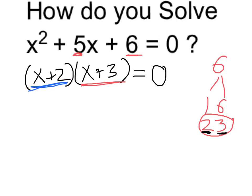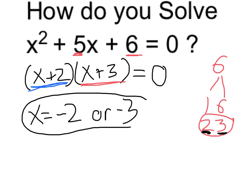So therefore, I want to know when this first binomial is 0. And it will be 0 if x is equal to negative 2, because negative 2 plus 2 is 0. And the second one underlined in red will be 0 if x is equal to negative 3. So those are my two possible solutions to my original equation.